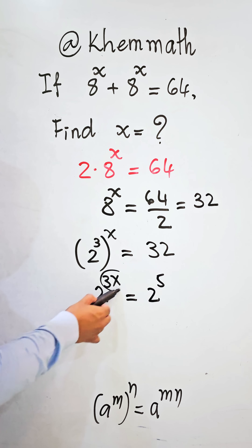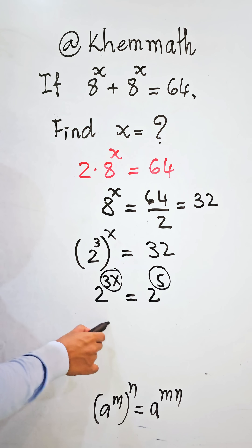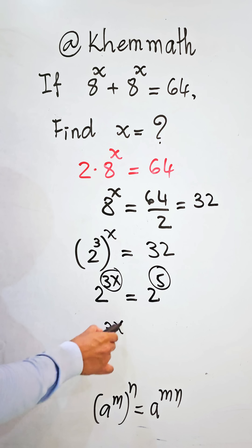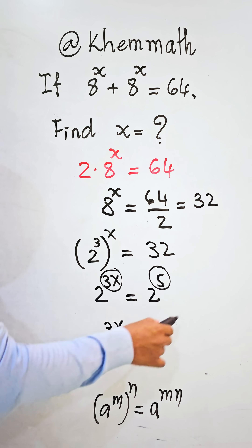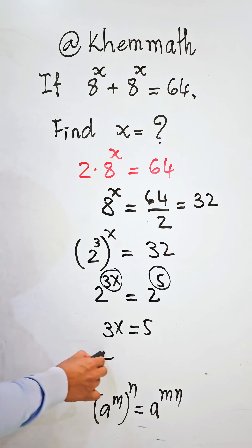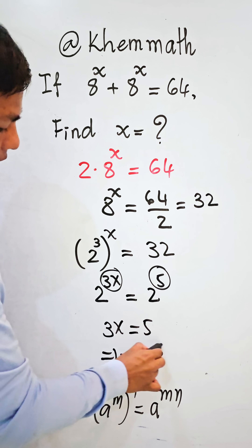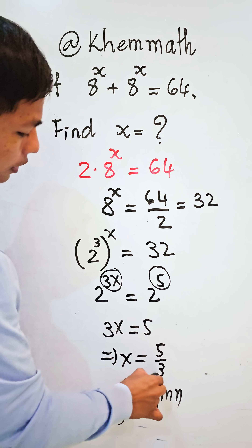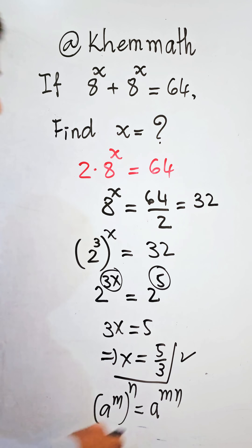Since the bases are the same, we equate the exponents: 3·8 equals 5. Dividing both sides by 3, we get 8 equals 5 divided by 3 as our answer.